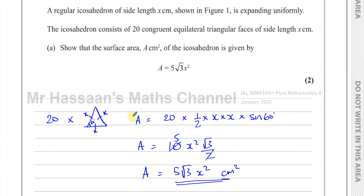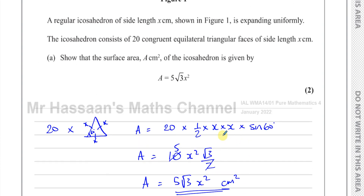So that's part a done. We used 20 equilateral triangles, and the easiest way to find the area of one is half ab sine C — half times two sides times the sine of the angle between them.